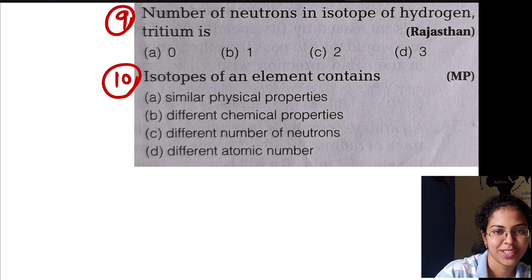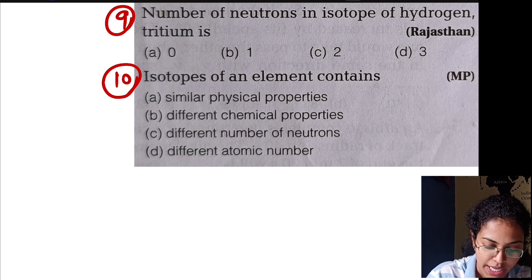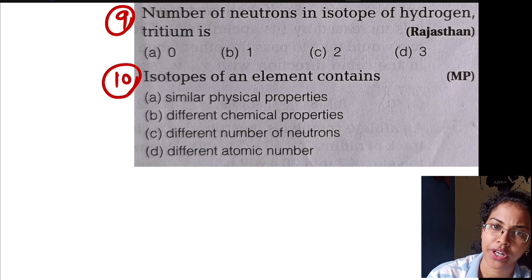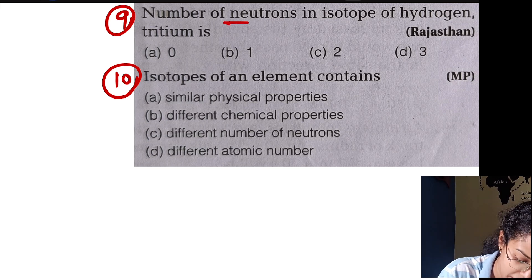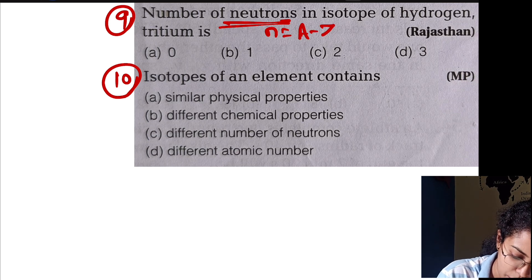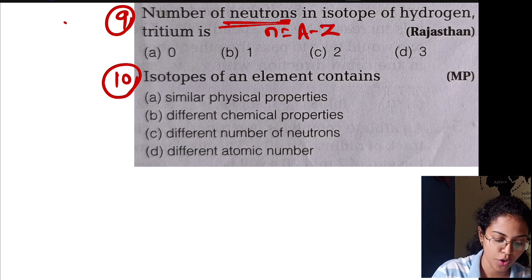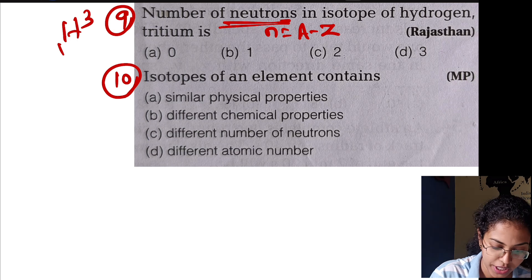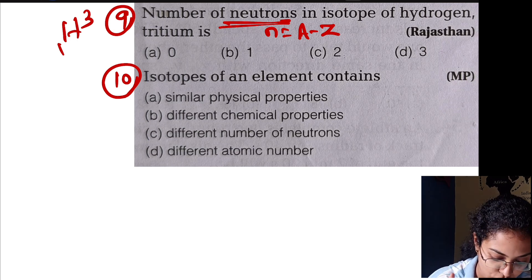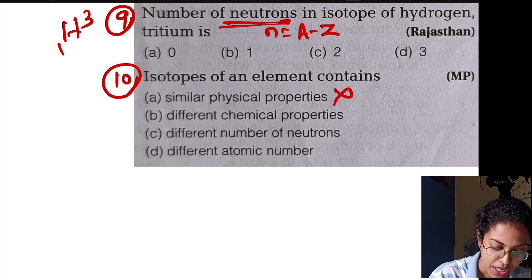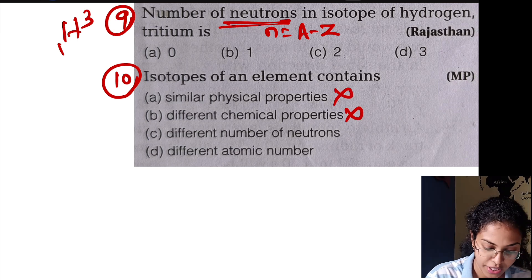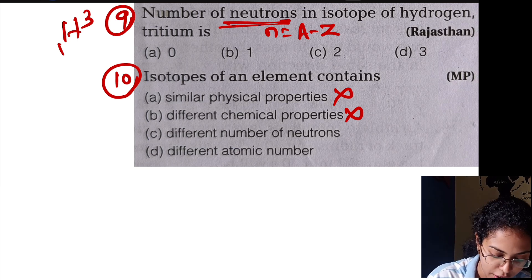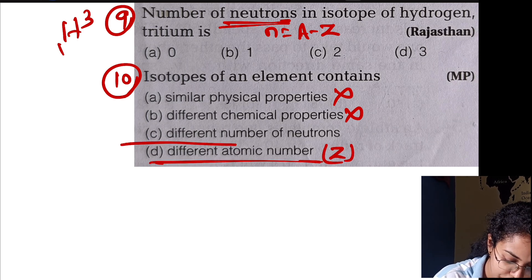The number of neutrons in isotopes of hydrogen — protium, deuterium, and tritium. Atomic number is 1 for all three; mass numbers are 1, 2, and 3 respectively. Number of neutrons = atomic mass minus atomic number. Isotopes have the same atomic number Z but different numbers of neutrons and different mass numbers.